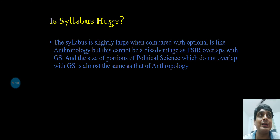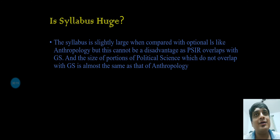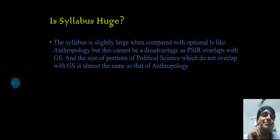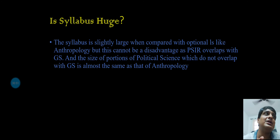Now the cons. Many people complain that PSIR is huge compared to options like anthropology. But this complaint is facile. PSIR has four sections across two papers. Part B completely overlaps with GS, and I have shown 60% of the content overlaps. So you only need to study 40-50% afresh. From this viewpoint, it is almost equal in burden to anthropology or sociology. And if you are interested in the subject, the size simply does not matter.